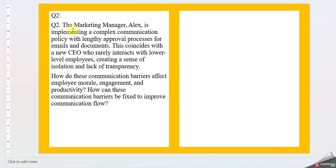Let's move to question two. The marketing manager, Alex, is implementing a complex communication policy with a lengthy approval process for emails and documents. This coincides with a new CEO who rarely interacts with lower-level employees, creating a sense of isolation and lack of transparency. How do these communication barriers affect employee morale, engagement, and productivity? How can these communication barriers be fixed to improve communication flow?